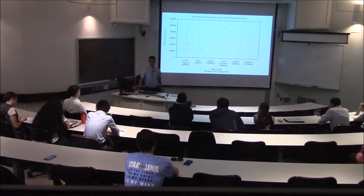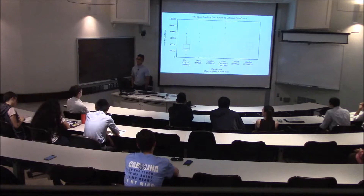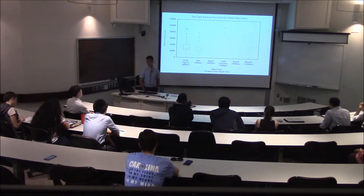The results are briefly shown here. The x-axis lists the data centers in order from closest to Chapel Hill to furthest. As predicted, the time it takes for the motion planning process to reach from its initial configuration to the goal state increases as the data center is further away.